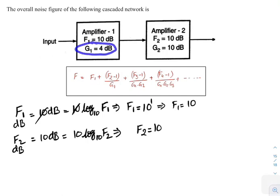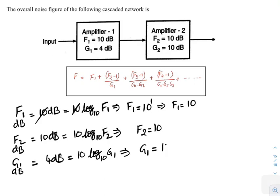Given gain of the first amplifier and gain of the second amplifier in decibels, but the gains that you have to substitute here are not in decibels. That is why you have to convert them. The gain G1 in decibels equals 4 dB, that equals 10 times log base 10 of G1. That implies G1 equals 10 power 0.4, that equals 2.51.